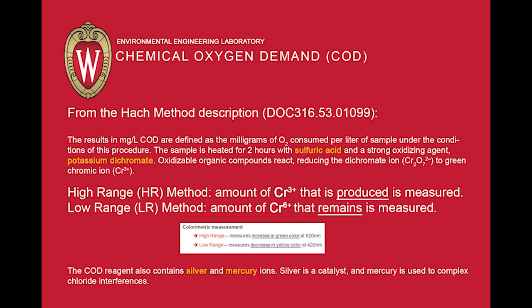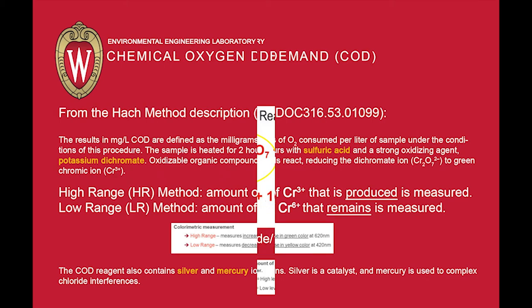The measurement is dependent on which kit is used. For high range, HR, up to 1500 mg per liter COD, we measure trivalent chromium, or Cr³⁺, the chromic ion produced, which is green in color. For low range, LR, up to about 150 mg per liter COD, we are measuring how much hexavalent chromium, or Cr⁶⁺, remains, which is yellow in color.